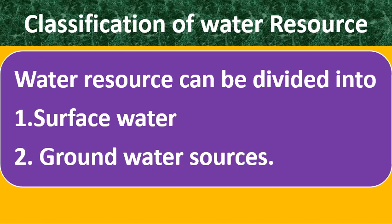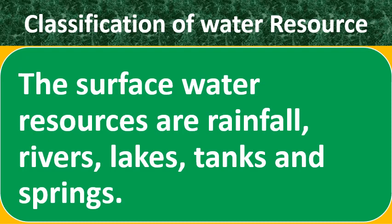Let us know the classification of water resources. Water resources can be divided into two: number one, surface water resources; number two, groundwater resources. The surface water resources are rainfall, rivers, lakes, tanks, and springs. The underground water resource is nothing but wells — either tube wells or open wells.